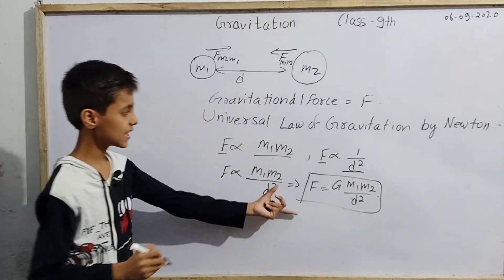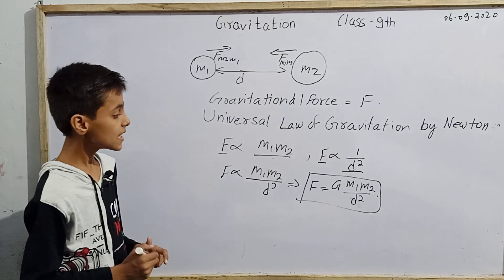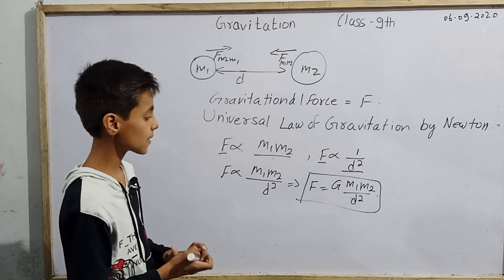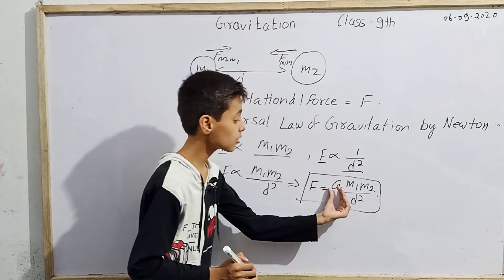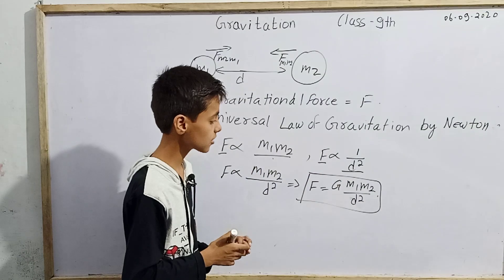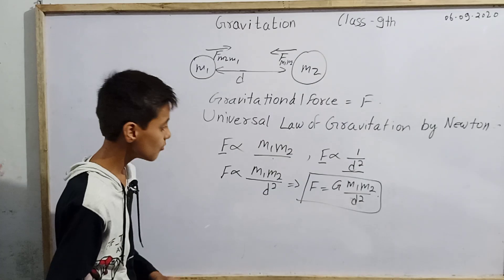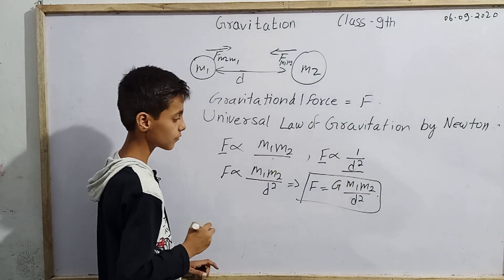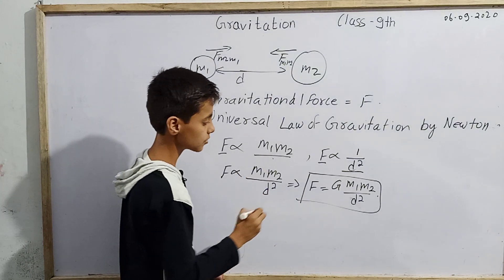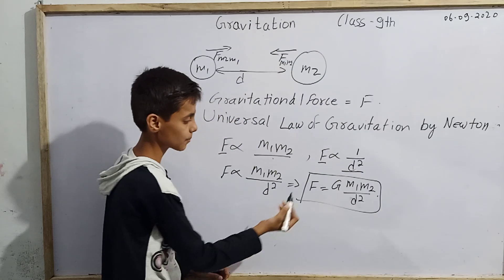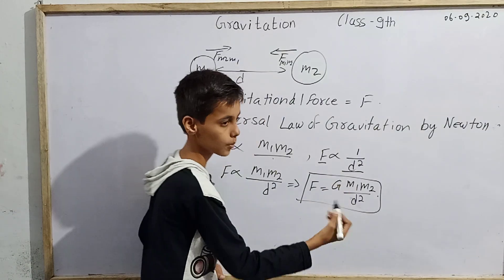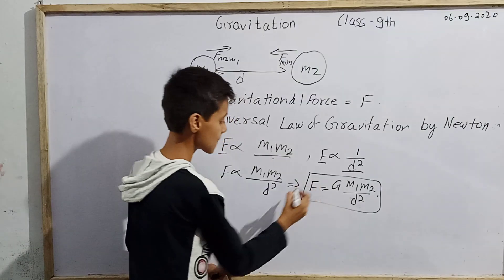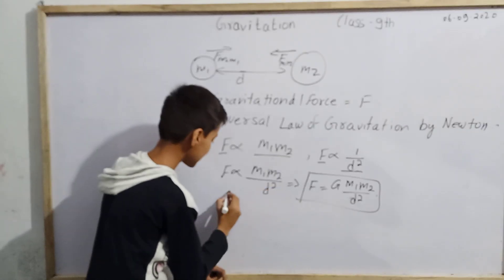Now the question arises: what is G? G is the proportionality constant, which we call the universal gravitational constant, or simply the gravitational constant. To find the unit of G, we rearrange the formula. From F = G m1 m2 / d squared, we can solve for G.